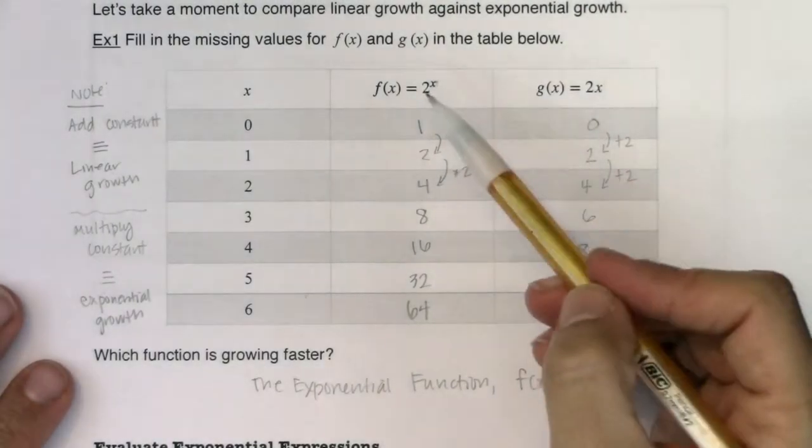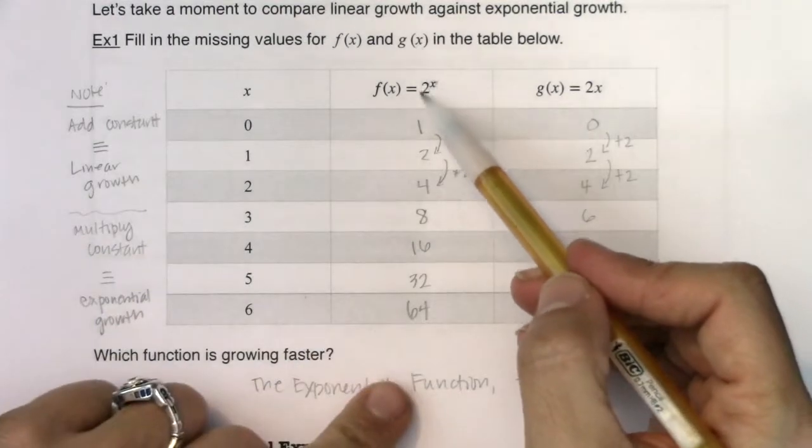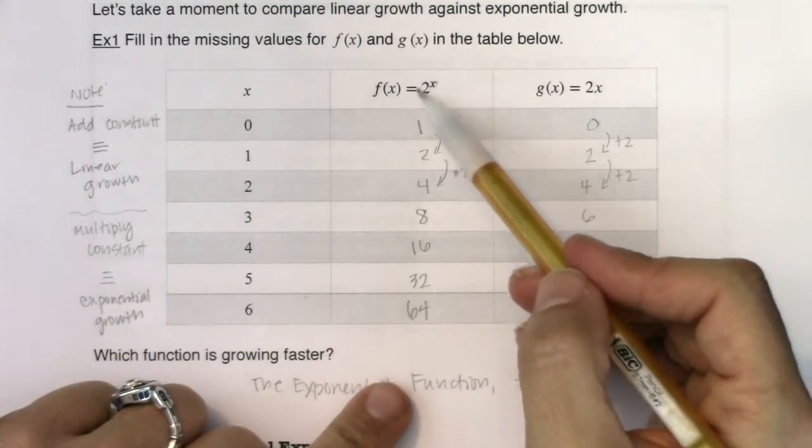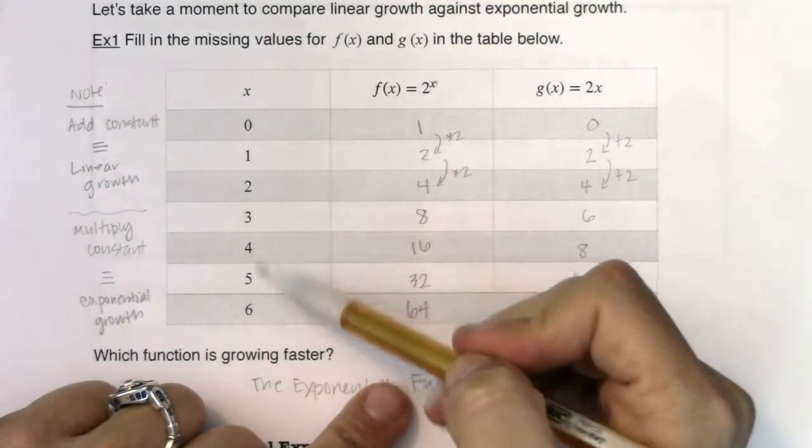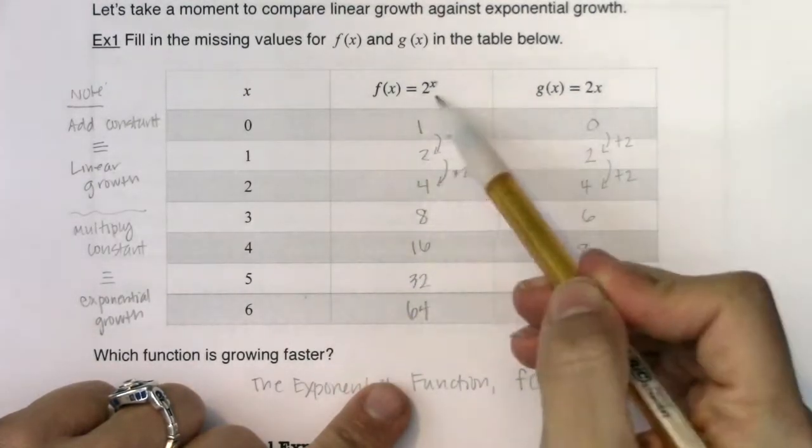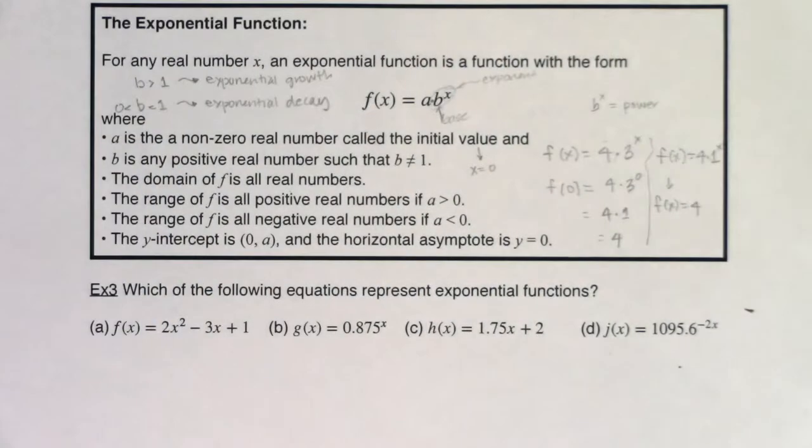And we saw a little exponential growth in example 1. Let me just kick this back for a moment. This was an exponential function because our variable was up in the exponent. And just take note that our base is larger than 1, it was 2. And you saw as my x values got larger, my y values got larger. This is an example of exponential growth.